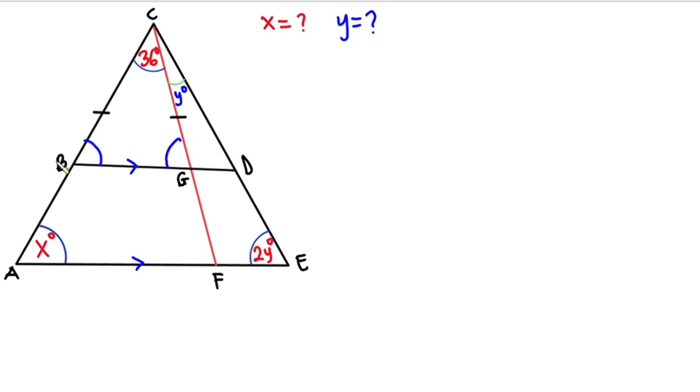Then line BG is parallel to line AF, so the angle over here is the same as this angle, that is corresponding angle. So this angle is also x degrees. And since triangle BCG is an isosceles triangle, the angle over here is also x degrees.